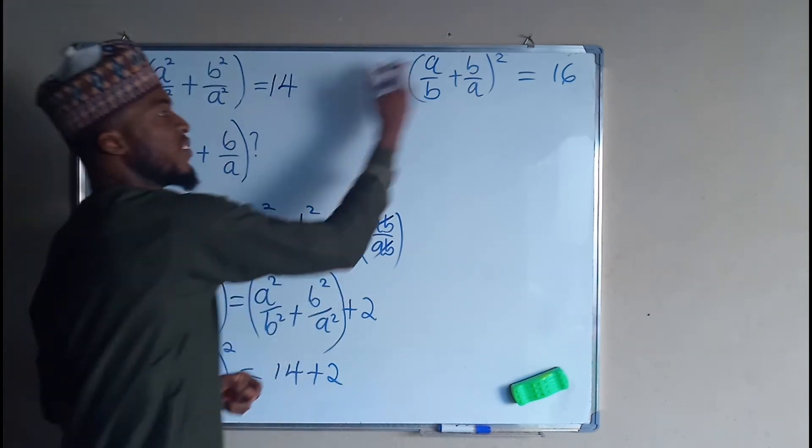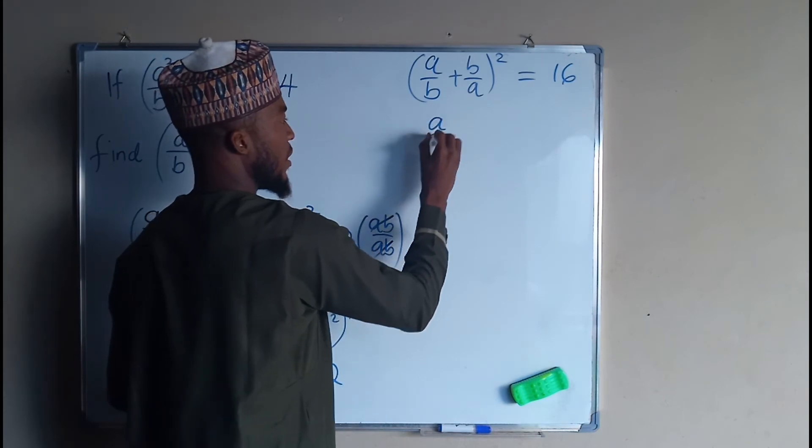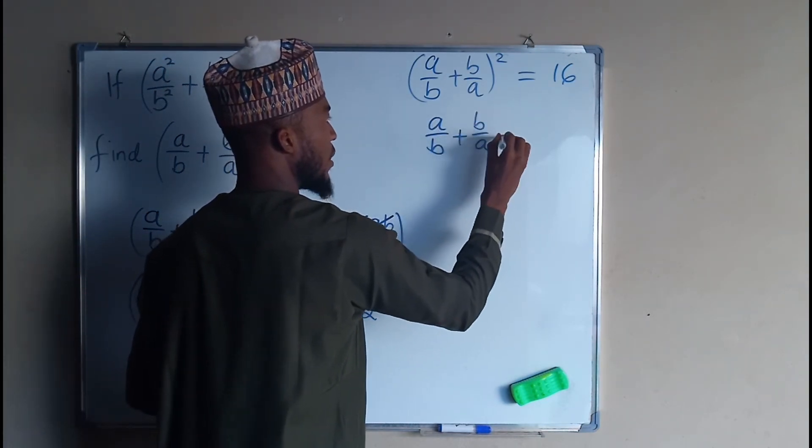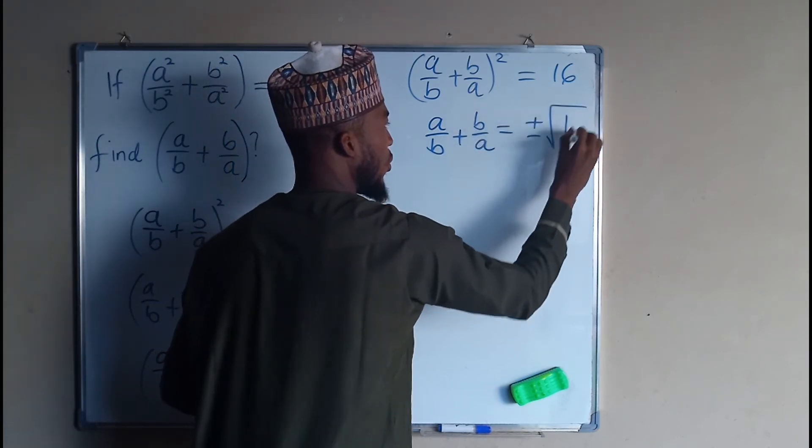Now we need to take the square root of each side in order to eliminate the square. So we have a/b + b/a equals plus or minus square root of 16.